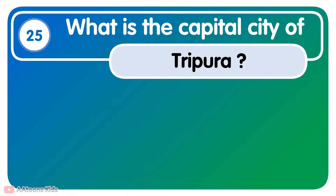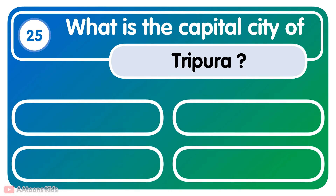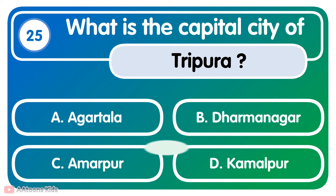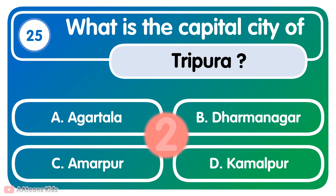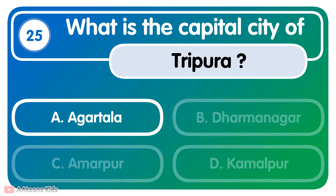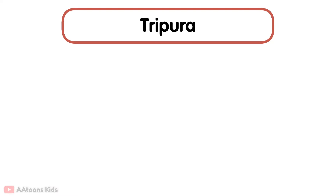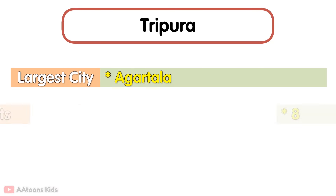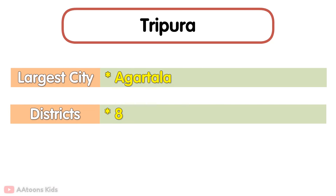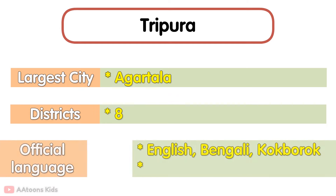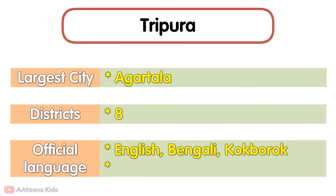What is the capital city of Tripura? Agartala. Agartala is the capital city of Tripura. The largest city is Agartala. It has 8 districts. The official languages are Bengali, English and Kokborok.